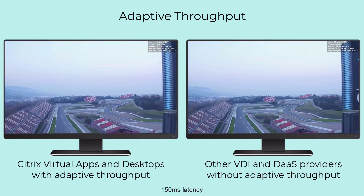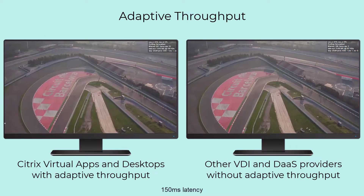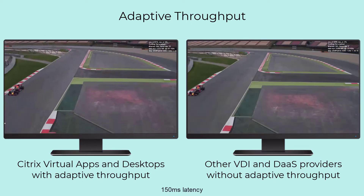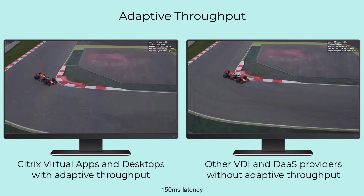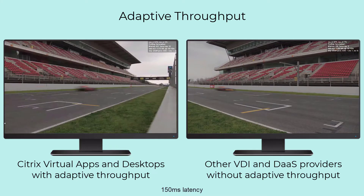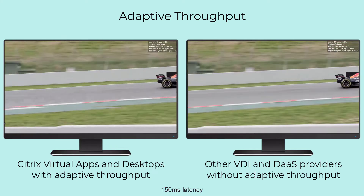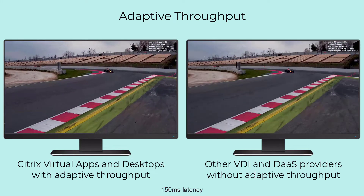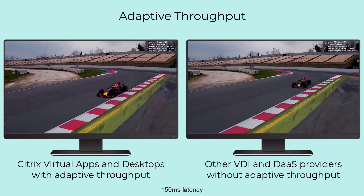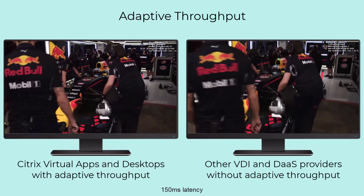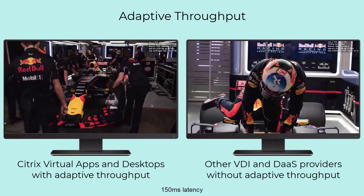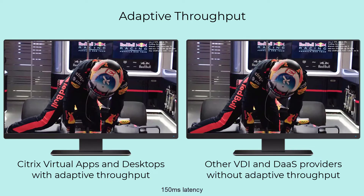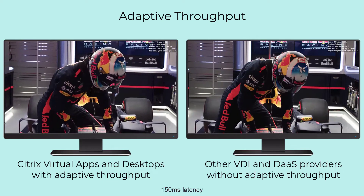On a degraded network, placing too much data on the wire degrades the experience due to over-allocation — we need a smaller buffer. But on a good network, if the buffer is too small, we are not fully utilizing all available capabilities.